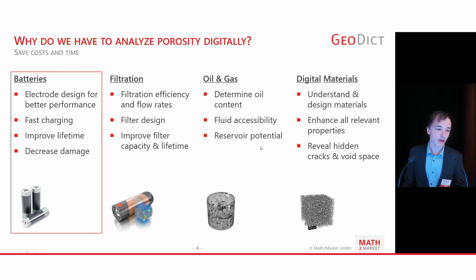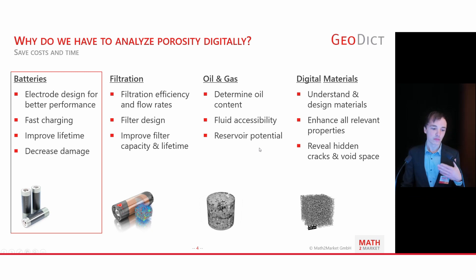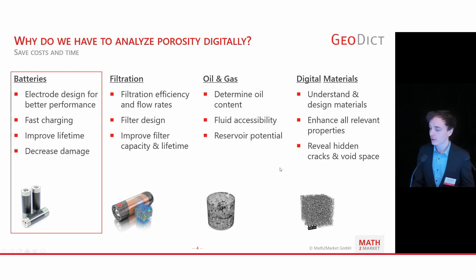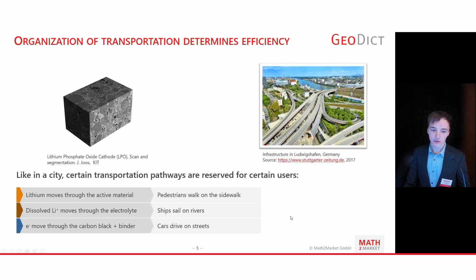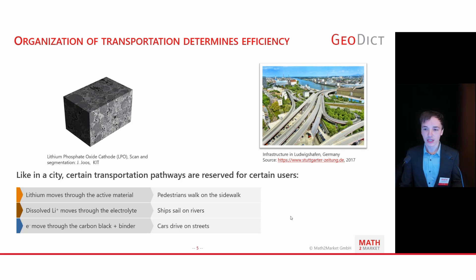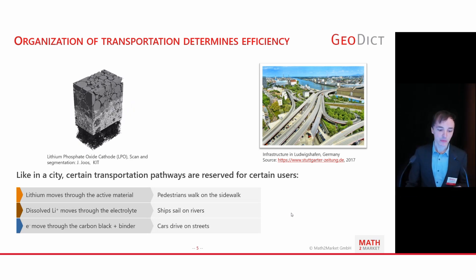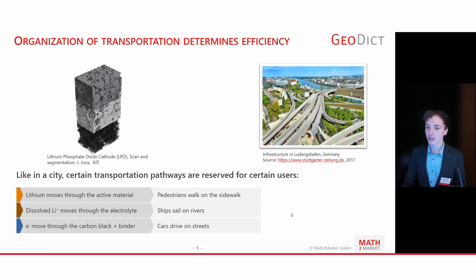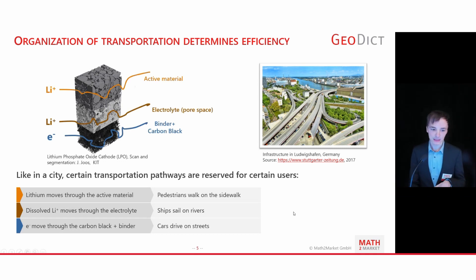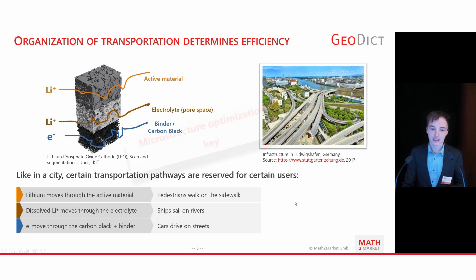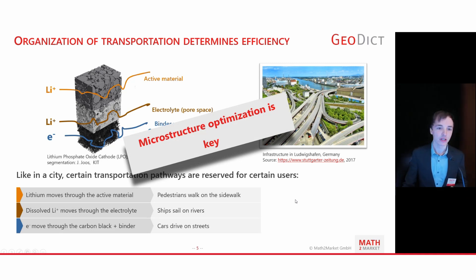First, I would like to talk about batteries and why it is so important to improve the battery design for improving their lifetime, decreasing damage over their lifetime, but also increasing their performance. You can imagine a battery infrastructure where lithium ions move through the active material, dissolved lithium moves through the electrolyte, and electrons move through the carbon black binder. With GeoDict, we can differentiate all three phases, label them differently, and assign material properties to them. Microstructure optimization is key for improving the battery.